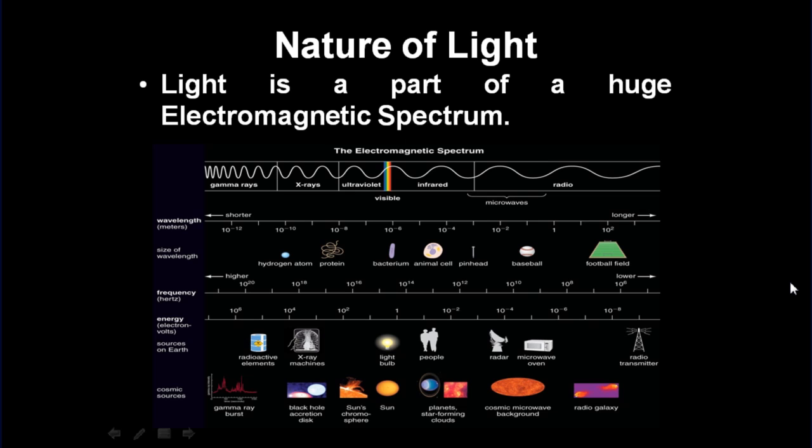On the leftmost we see the gamma rays which are of extremely short wavelength. As we proceed right, the wavelength goes on increasing. The radio waves are having the longest wavelength.